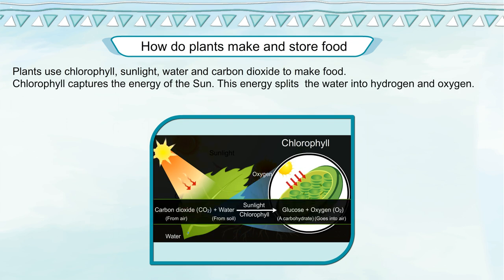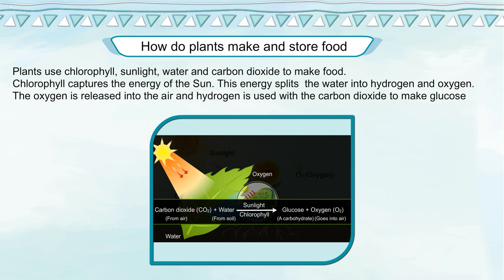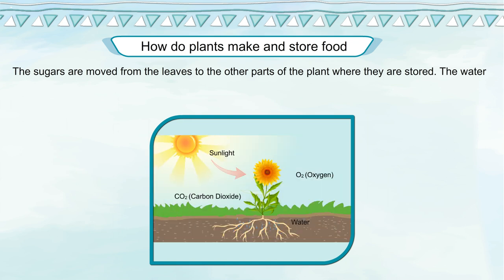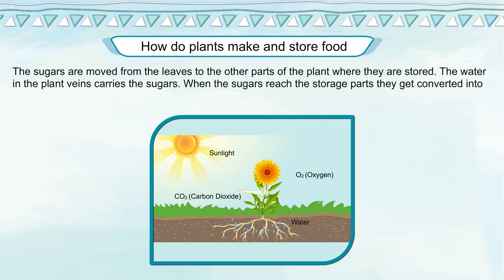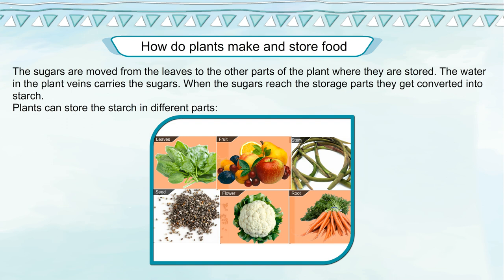Plants use chlorophyll, sunlight, water, and carbon dioxide to make food. Chlorophyll captures the energy of the sun; this energy splits water into hydrogen and oxygen. The oxygen is released into the air, and the hydrogen is used with carbon dioxide to make glucose sugars. The sugars are moved from the leaves to other parts of the plant through the veins. When the sugars reach the storage site, they get converted into starch. Plants can store starch in different parts: leaves, fruit, stem, seeds, flowers, and roots.